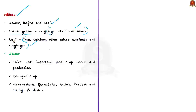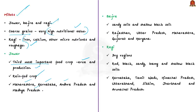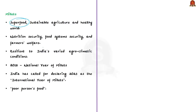Jowar is the third most important food crop with respect to area and production. It is a rain-fed crop mostly grown in moist areas that hardly need irrigation. Major jowar-producing states are Maharashtra, Karnataka, and Madhya Pradesh. Bajra grows well on sandy soils and shallow black soil; major bajra-producing states are Rajasthan, Uttar Pradesh, Maharashtra, Gujarat, and Haryana. Ragi is a crop of dry regions and grows well on red soil, black soil, sandy loamy, and shallow black soils; major ragi-producing states are Karnataka, Tamil Nadu, Himachal Pradesh, Uttarakhand, Sikkim, Jharkhand, and Arunachal Pradesh.